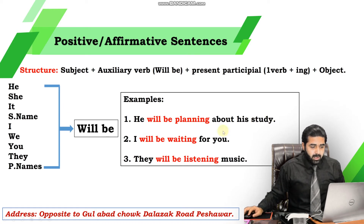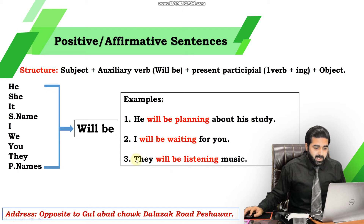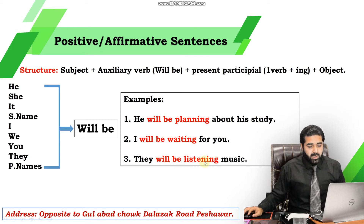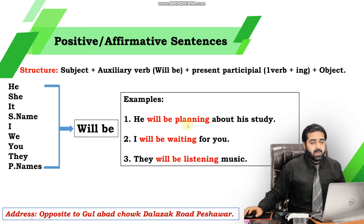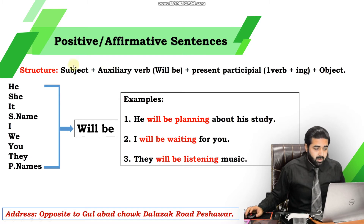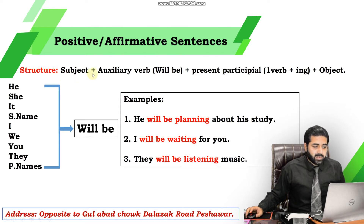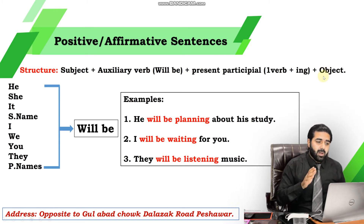Here are some examples: He will be planning about his study. I will be waiting for you. They will be listening to music. In the last example, the subject is 'they,' auxiliary verb is 'will be,' and present participle is 'listening' (verb + ing). Remember — always focus on structure. آپ نے subject plus will be plus verb ing plus object یاد رکھنا ہے، اس سے آپ Future Continuous Tense میں sentences بنا سکتے ہیں۔